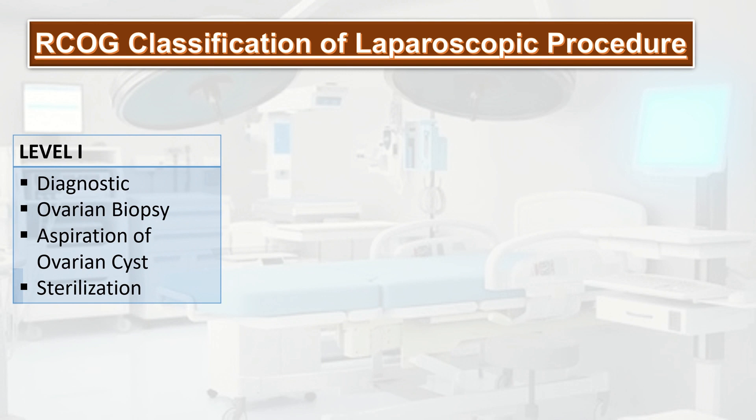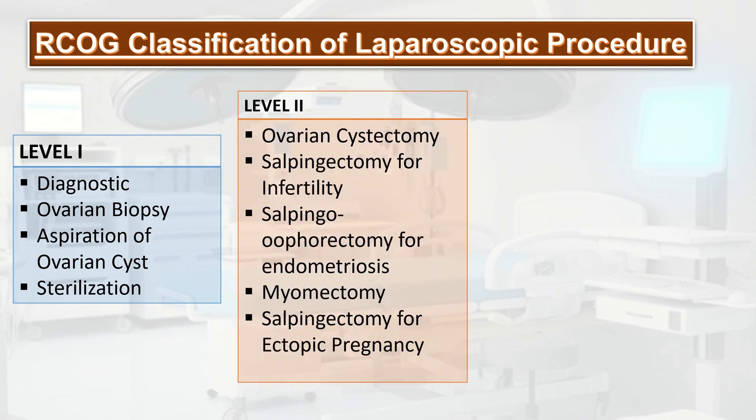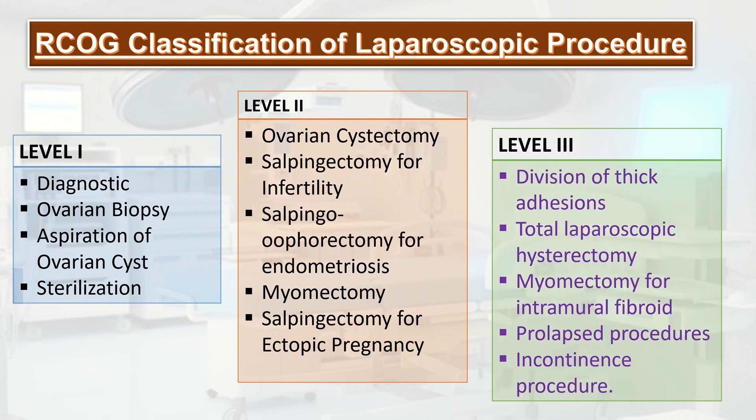Level one includes diagnostic purposes, ovarian biopsy, aspiration of ovarian cyst, and sterilization. Level two includes ovarian cystectomy, salpingotomy for infertility, salpingo-oophorectomy for endometriosis, myomectomy, and salpingotomy for ectopic pregnancy. Level three includes division of thick adhesions, total laparoscopic hysterectomy, myomectomy for intramural fibroid, prolapse procedure, and incontinence procedure.